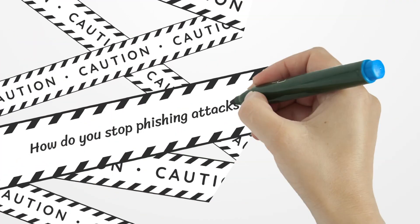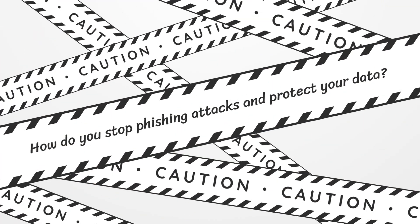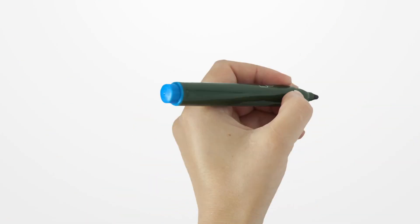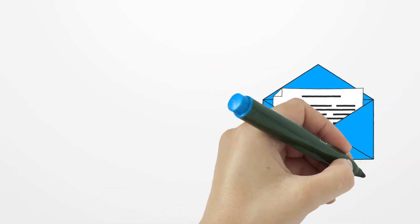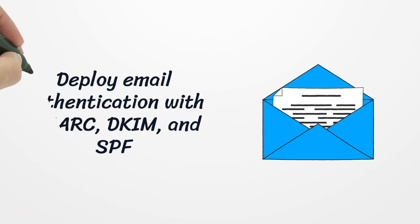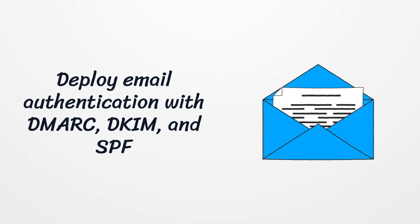So, how do you stop phishing attacks on your company and protect your data? You have to deploy email authentication with DMARC, DKIM, and SPF to improve outgoing email security and protect your domain and data.